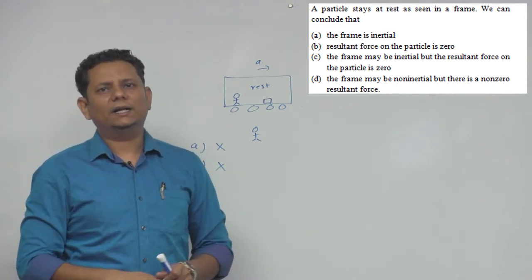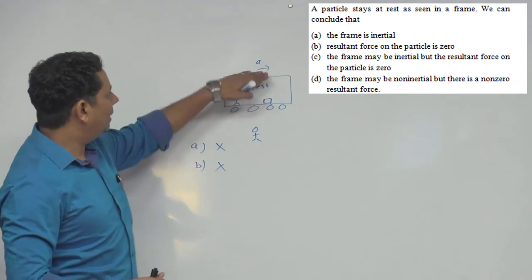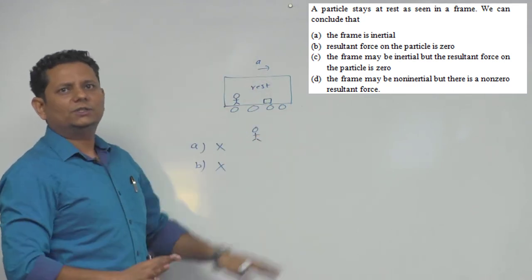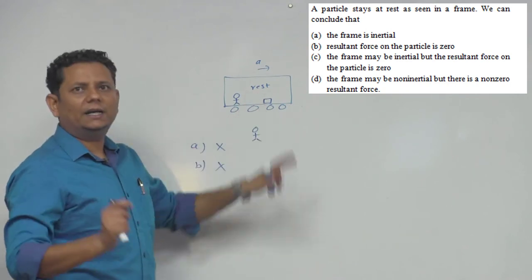Option C says the frame may be inertial but the resultant force on the particle is zero. It's possible the frame is at rest without acceleration. So this is a possibility that frame may be inertial and the net resultant force on the particle is zero.